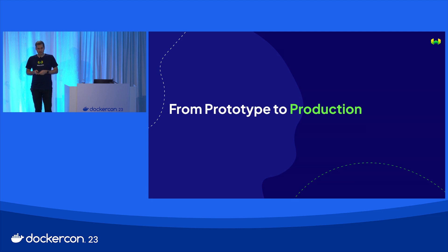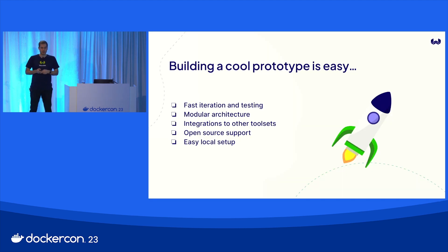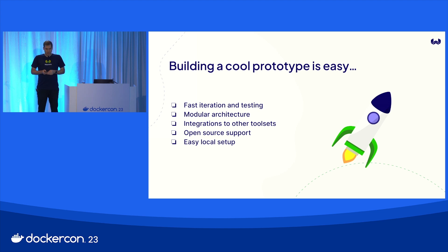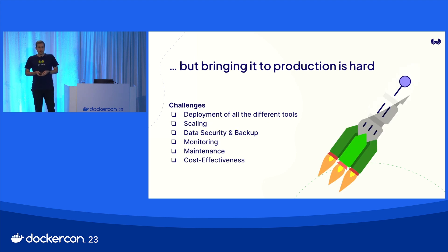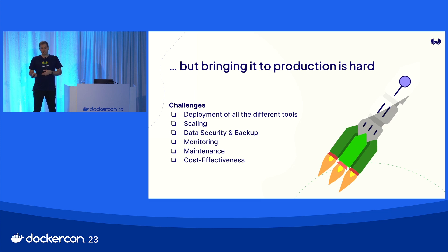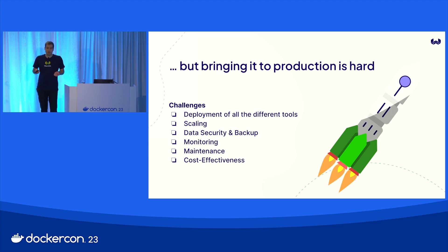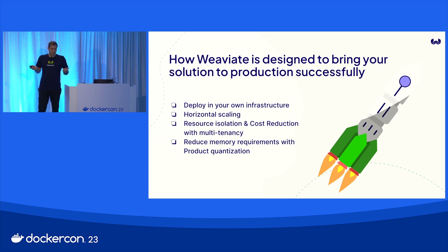Once you've done that, ideally you can build your cool prototype and iterate fast, figure out that you really do get value out of it. But production is actually kind of hard, because you get all kinds of production challenges. You need all the parts that you need to deploy. You need to think about scaling, security, reliability, durability, observability, maintenance, and last but not least, cost effectiveness. AI right now — everyone is in this super excited state. So we kind of ignore the cost. But a lot of that is actually super expensive, and if you want to create business value in production, you need to think about cost as well. This is where Weaviate has got you covered.